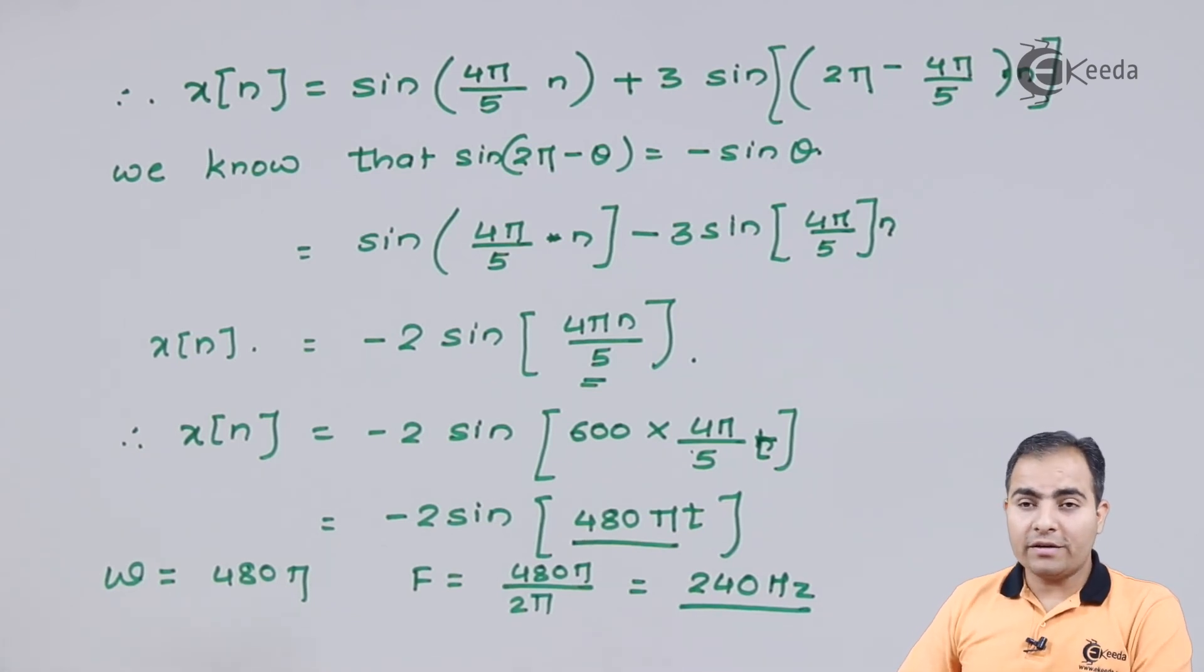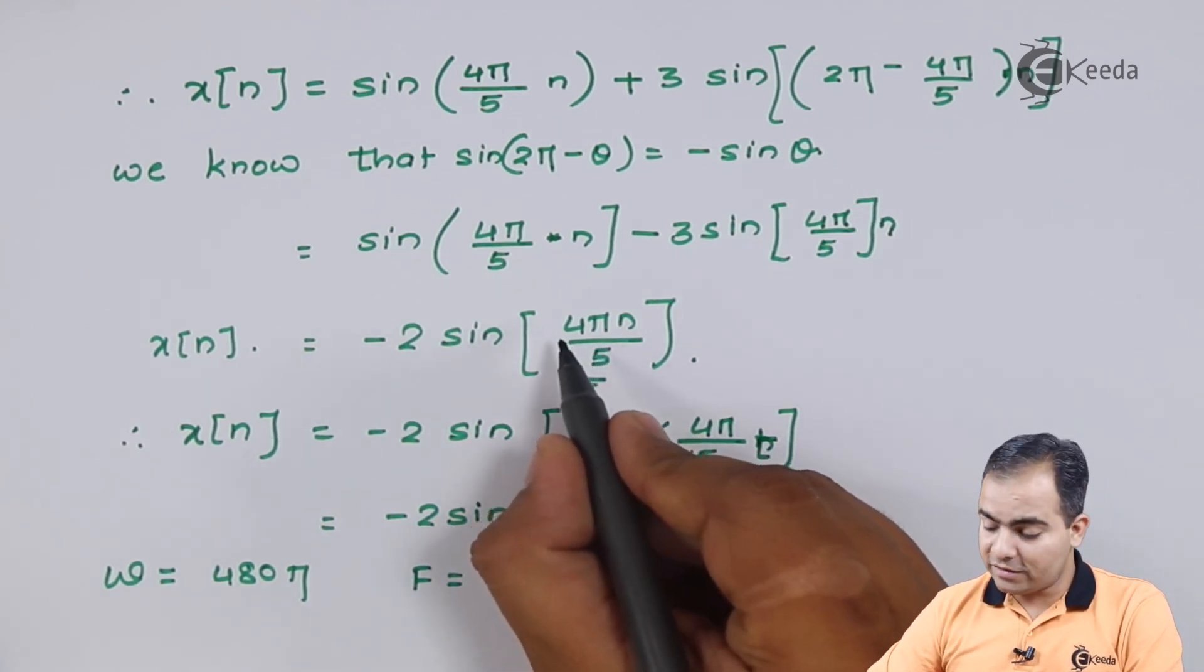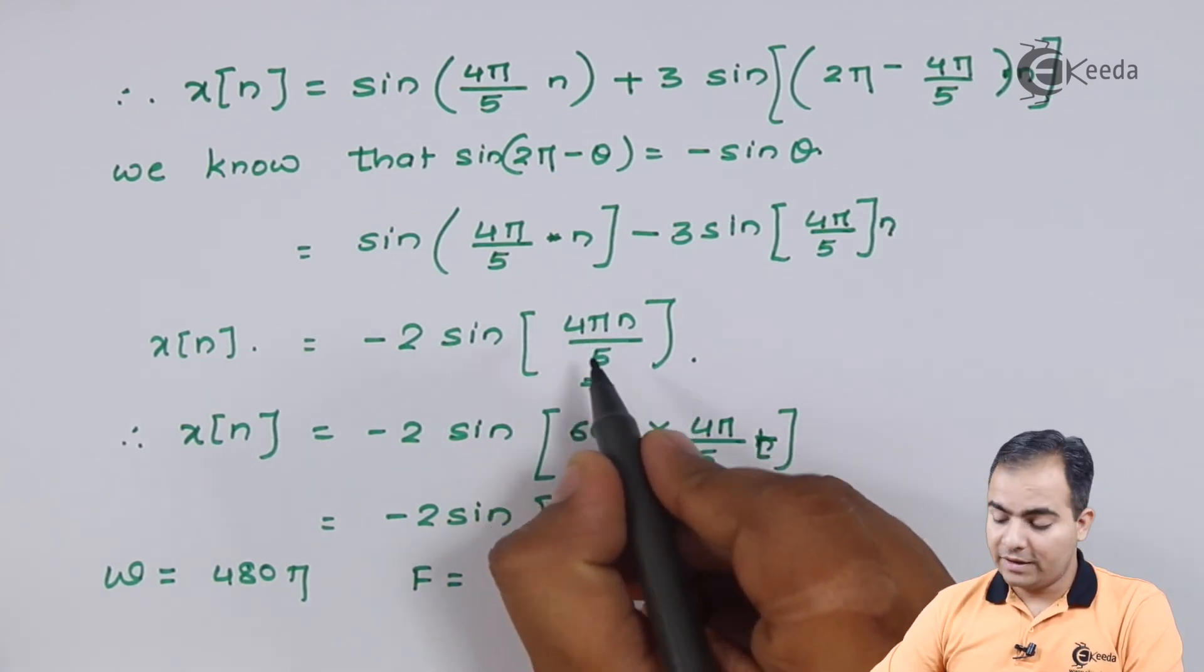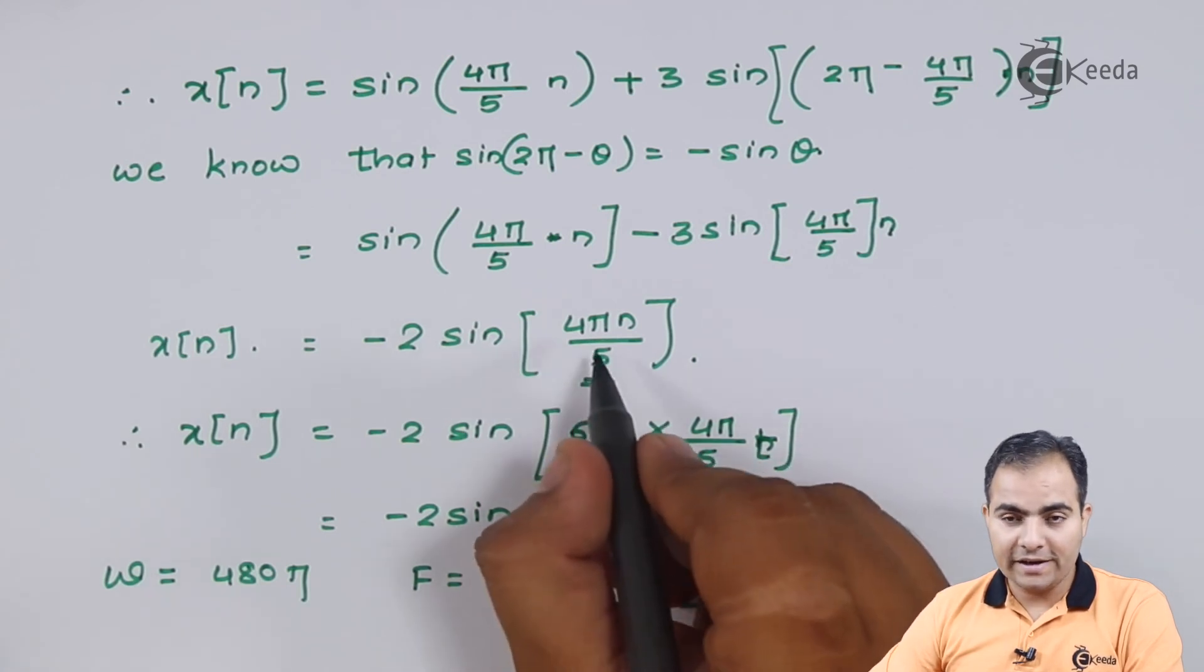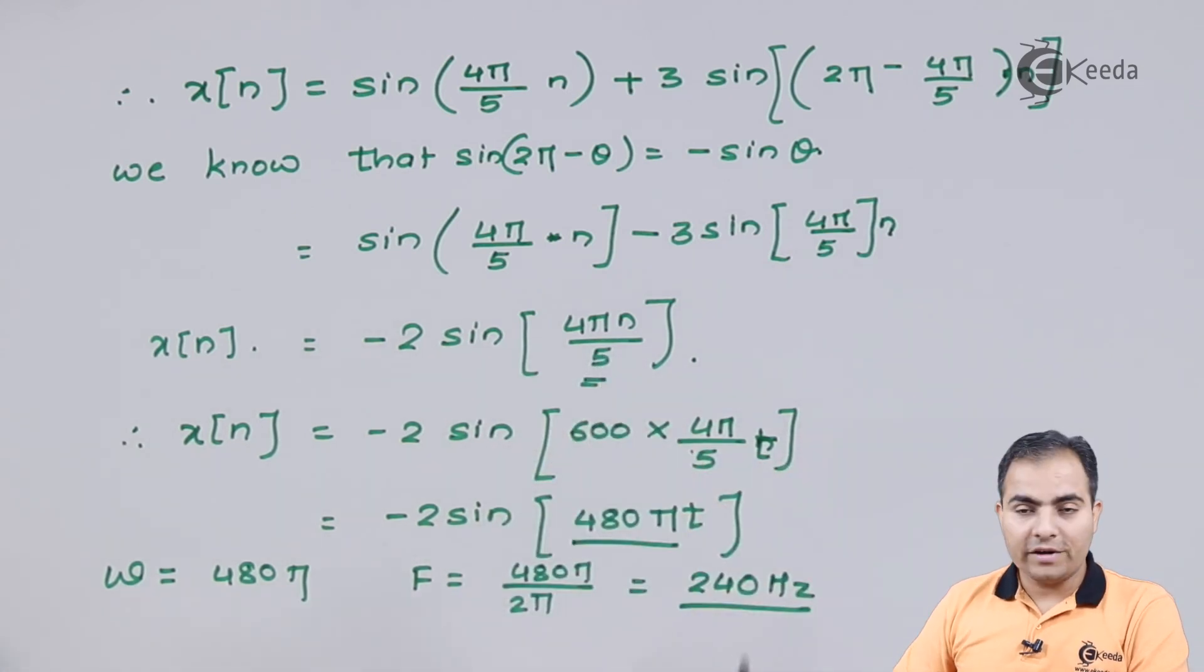So my folding frequency is 240. But if I want to calculate it in radians form, then in radians my answer is 4π/5. This is the frequency in radians, and this is our folding frequency.